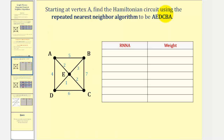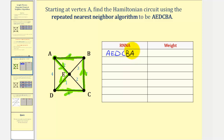Let's apply the repeated Nearest Neighbor Algorithm to the same graph. Beginning at vertex A, we can visit B, E, or D, but E is closest since edge AE has a weight of 2. From E, we can visit B or D — edge ED has a weight of 1, so we visit D next. We then must visit C, B, and return to A. The circuit is AEDCBA with a total weight of 2 + 1 + 6 + 7 + 5 = 21.